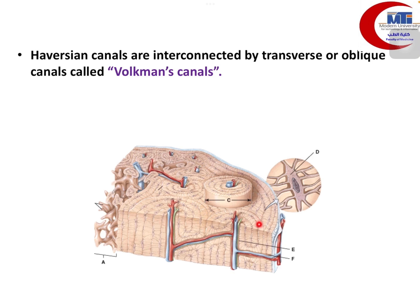The calcified bone lamellae enclose lacunae containing osteocytes, shown here with processes running in tiny canaliculi present in the bone lamellae. These canaliculi contain the processes of osteocytes, connecting adjacent osteocytes together to maintain the integrity of bone tissue and to transmit nutrients, signaling molecules, and impulses between osteocytes in a seamless manner.